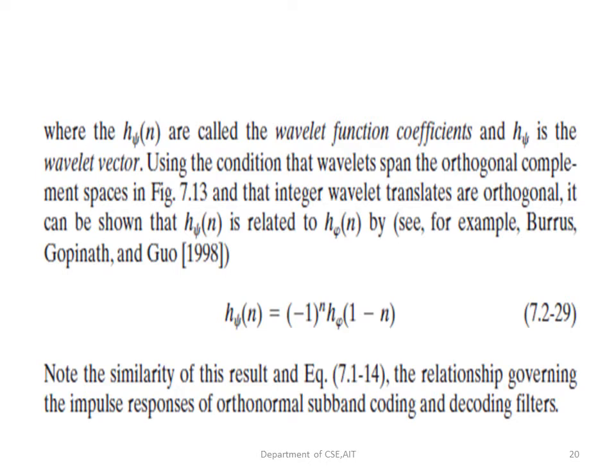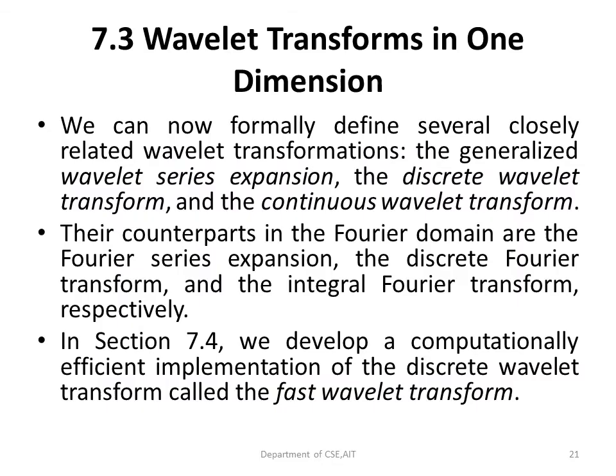By using the conditions that wavelets span the orthogonal complement spaces, the integer wavelet translates will be orthogonal. It can also be shown that h_ψ(n) is related to h_φ(n) by the equation h_ψ(n) = (−1)^n h_φ(1 − n). This is similar to the relationship governing the impulse responses of orthonormal subband coding and decoding filters.